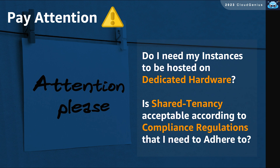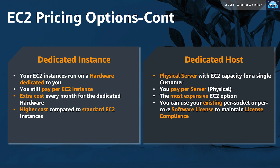Some workloads, for compliance or licensing purposes, might need dedicated hardware only allocated to them to pass their compliance requirements. There are two dedicated hosting pricing models. You can choose dedicated instances, and AWS will allocate a physical host for you. You still pay per instance, in addition to an extra fixed cost per dedicated host per month, so it is more expensive than the standard EC2 pricing. The other alternative is to get directly from AWS a dedicated host and become responsible for it. You pay per host to AWS, and you can benefit here from the ability to bring your own license to that dedicated hardware.